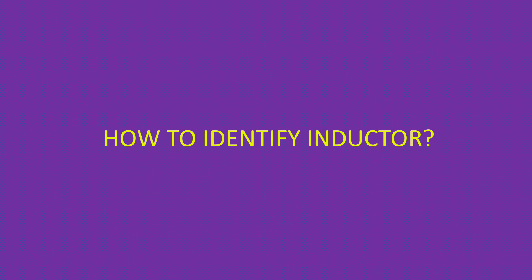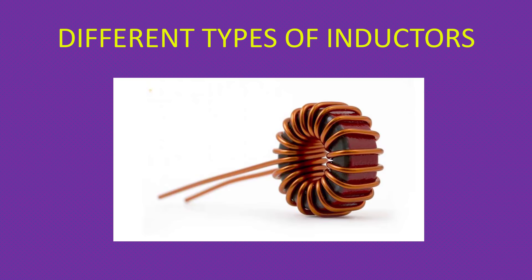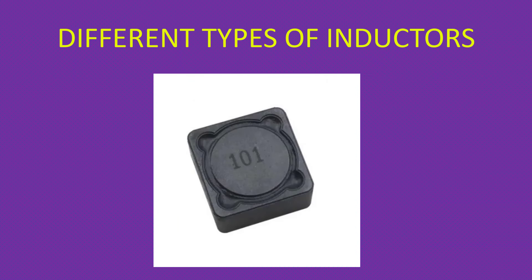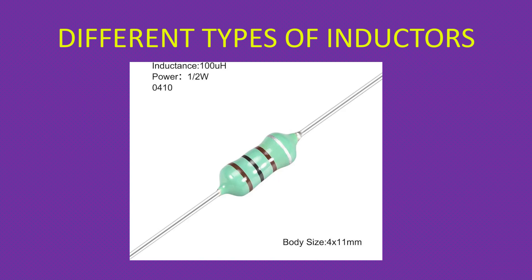How to identify an inductor? Inductors are normally found in the form of a coil — you can see a coil with a core-like arrangement inside. If you see this arrangement you can identify it as an inductor. Inductors also come with an outer cover to shield the magnetic field. In this form also inductors are available in the market. There is also a form similar to a resistor, with two leads and rings. You can differentiate a resistor from an inductor — in a resistor the center part is slightly curved, while in an inductor it is thicker.